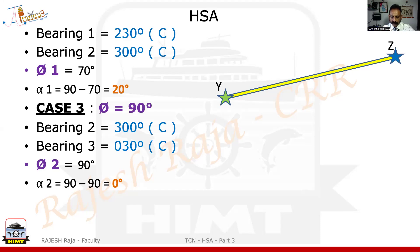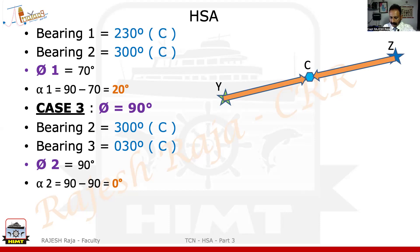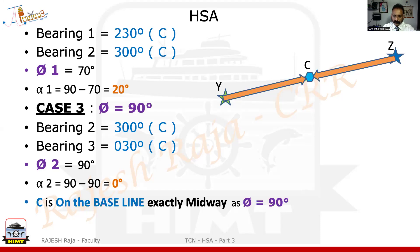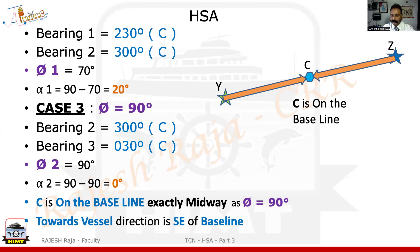Now, in this case when theta is 90, alpha is 0, which means there is no difference of angle between the yellow baseline and the orange line we draw. So I run the orange line from Yankee and also from Zulu with no angular difference — they meet exactly at the midpoint of the baseline. This becomes my Charlie. Charlie is on the baseline exactly midway because theta is equal to 90. You could also have drawn this Charlie by the perpendicular bisector method and you would get exactly the same point.